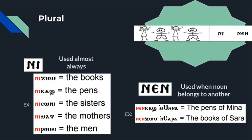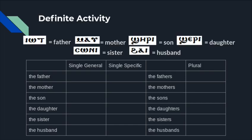The only exception is when nen is used. Nen is used when a noun belongs to another noun. For example, ni kash and mina means the pens of Mina. As seen in that example, the pens belong to Mina. The same thing happens with ni gom and Sarah. This means the books of Sarah. The books belonged to Sarah.